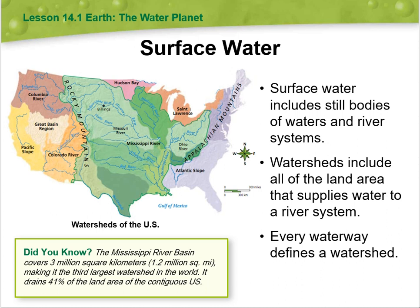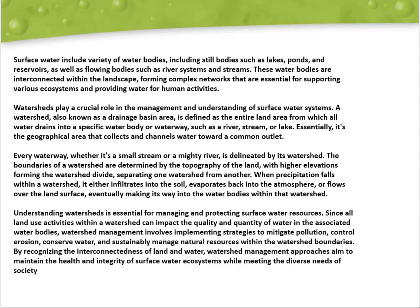Surface water includes still bodies of water and river systems. Watersheds include all of the land areas that supply water to a river system. Every waterway defines a watershed. Surface water includes a variety of water bodies, including still bodies such as lakes, ponds, and reservoirs, as well as flowing bodies such as river systems and streams. These water bodies are interconnected within the landscape, forming complex networks that are essential for supporting various ecosystems and providing water for human activities.